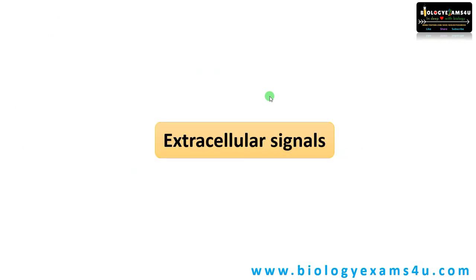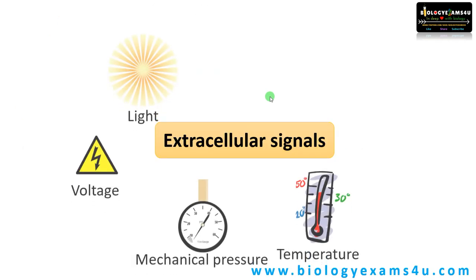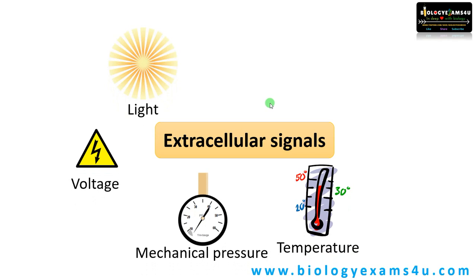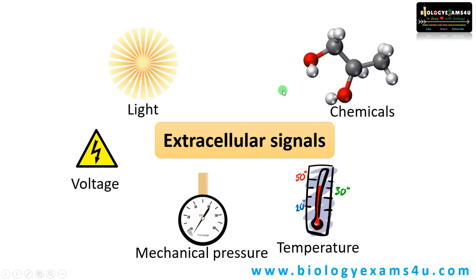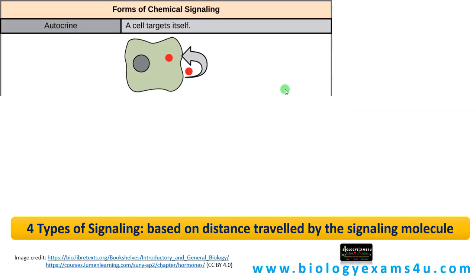Now let us see what are the extracellular signals. There are physical agents like light, voltage, mechanical pressure, and temperature — all are extracellular signals — and of course chemicals are also extracellular signals. Now let us understand the four types of signaling, and this is based on the distance traveled by the signaling molecule or ligand.